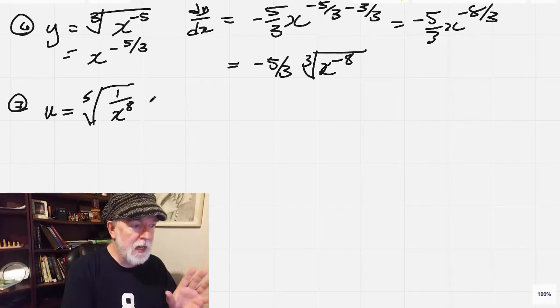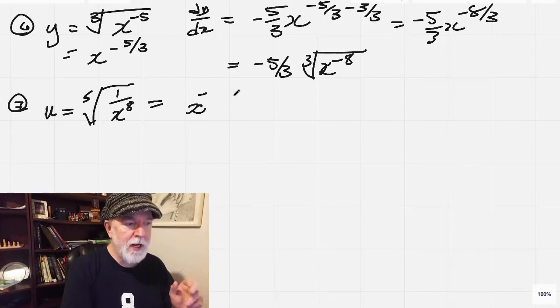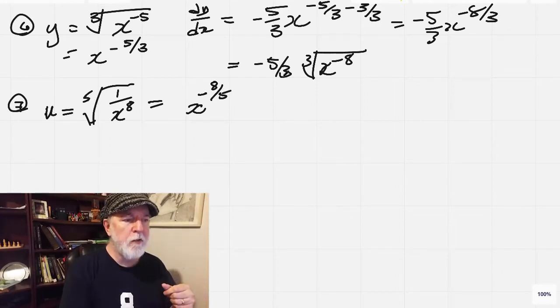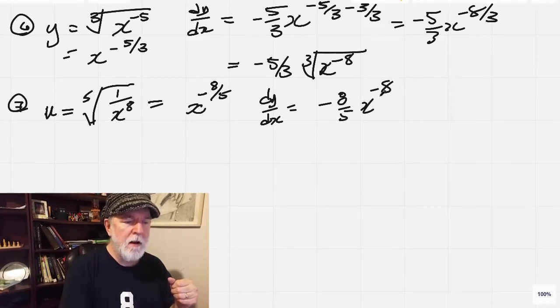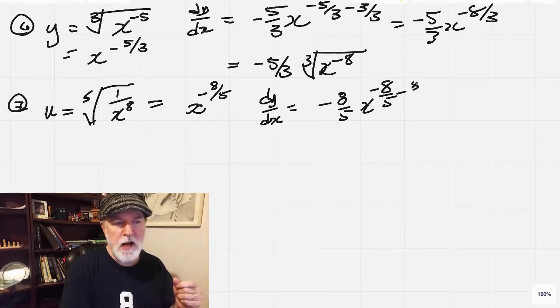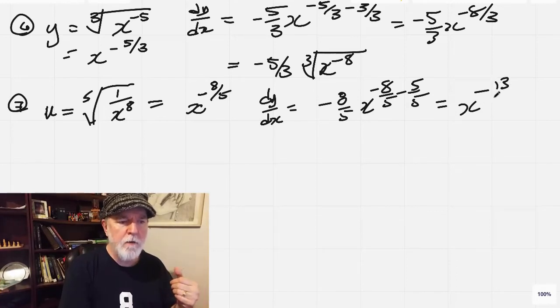Number 7, we're going to have x as an exponent. So we're going to have x, it's going to be negative, because we had x in the denominator. So 8 over 5, 8 fifths. And so dy by dx equals negative 8 fifths, x to the negative 8 fifths, minus 5 fifths, equals x to the negative 13 fifths.